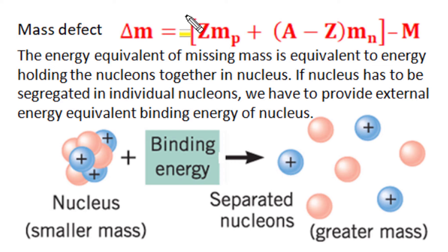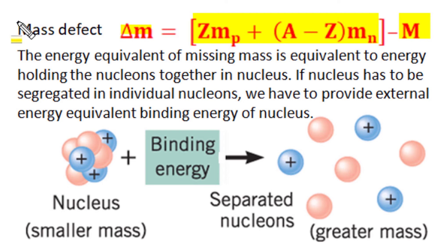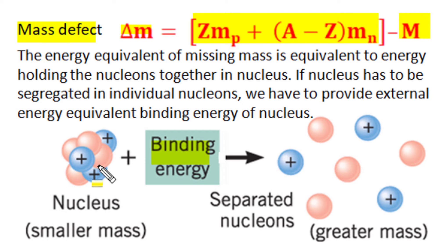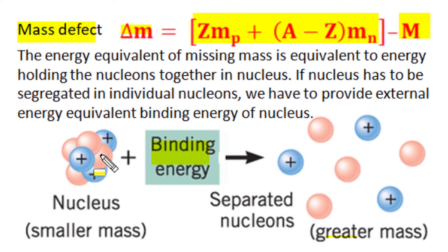There exists a mass difference between the sum total mass of all nucleons and the mass of the resultant nucleus. The energy equivalent of this missing mass — this mass defect — holds the nucleons together in the nucleus. If the nucleus is segregated into individual nucleons, the smaller mass of the nucleus becomes the greater mass of the separated nucleons, and this additional mass is created by providing external energy equivalent to the binding energy of the nucleus.